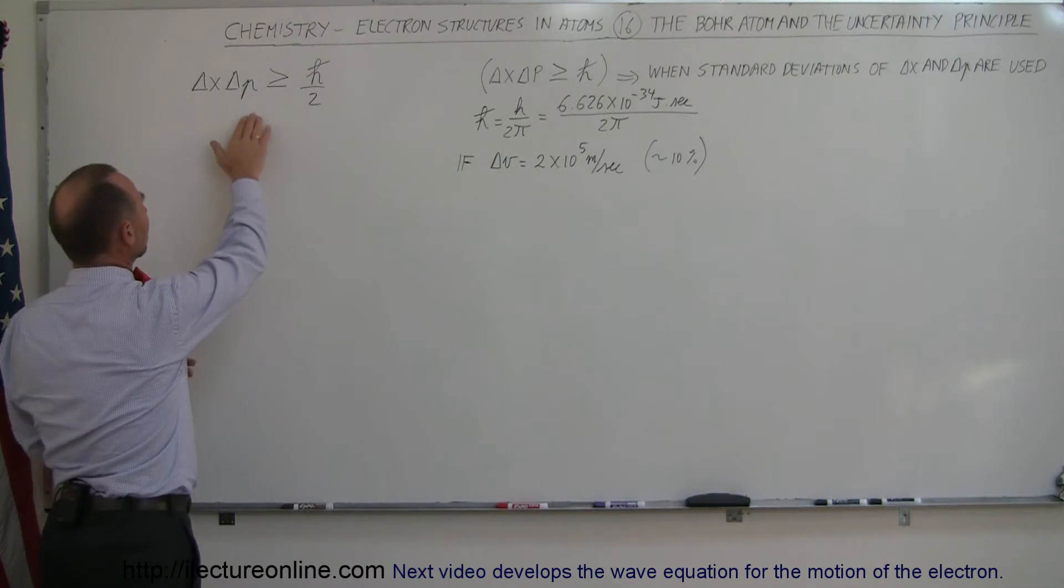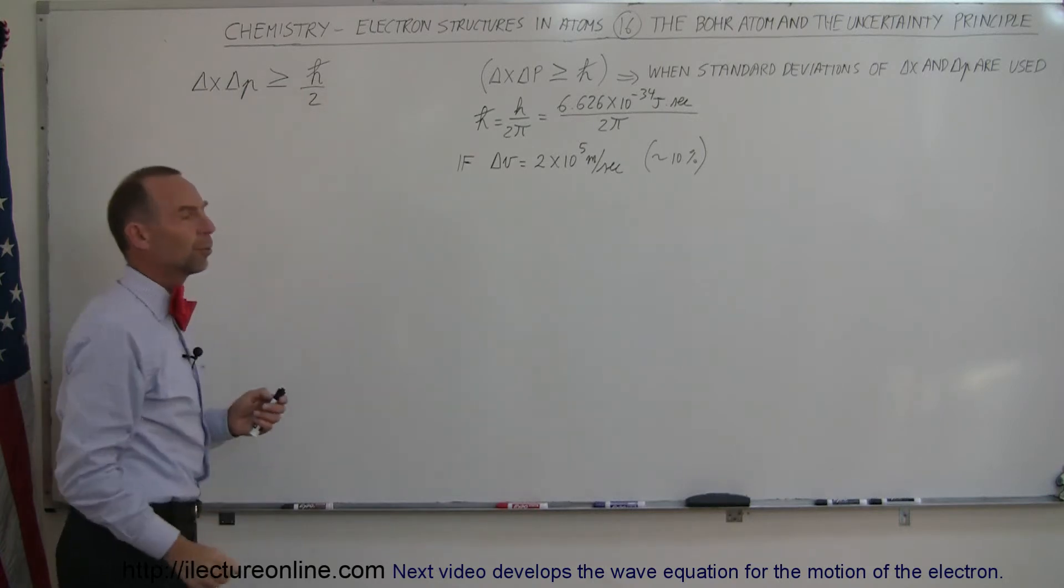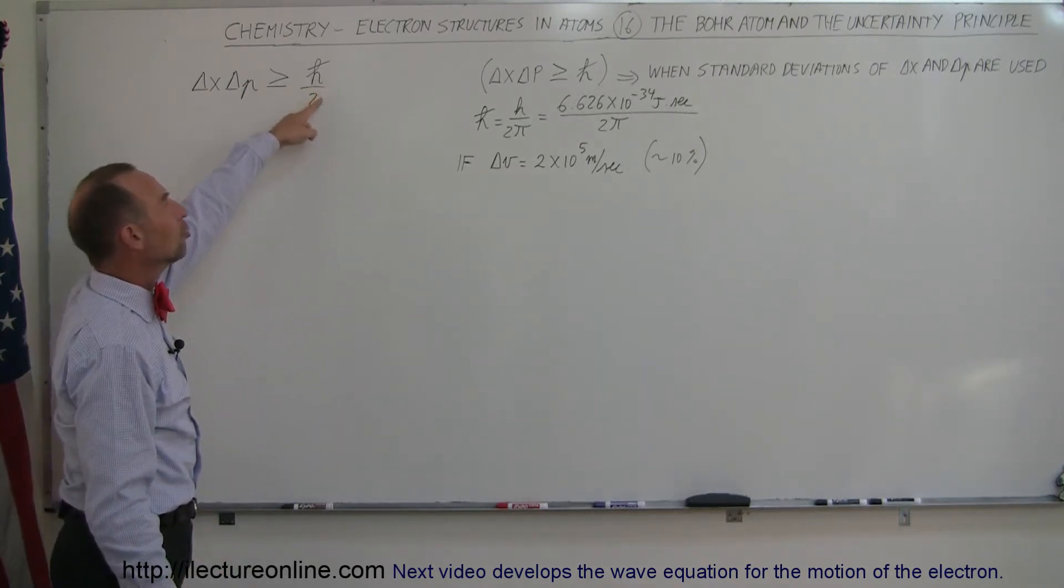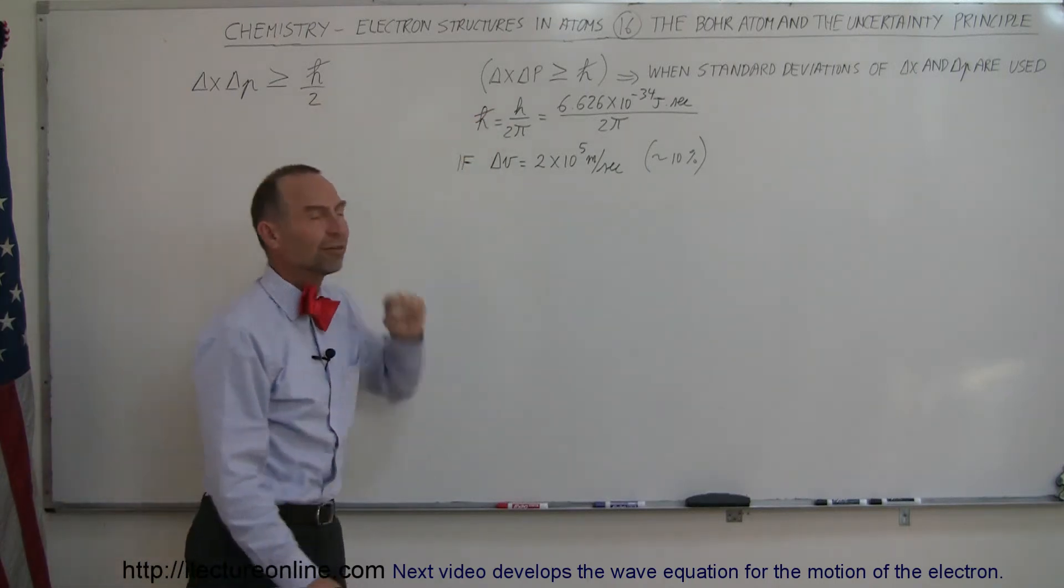So what we're trying to do here is trying to establish how well we can determine the position of an electron in an atom if there's a certain amount of uncertainty in its velocity. And of course, if we look at the uncertainty principle, we know that the product of the two uncertainties always have to be greater than some minimum number, which is Planck's constant divided by 2, divided by 2π, because by definition, H with a little line through it is Planck's constant divided by 2π.